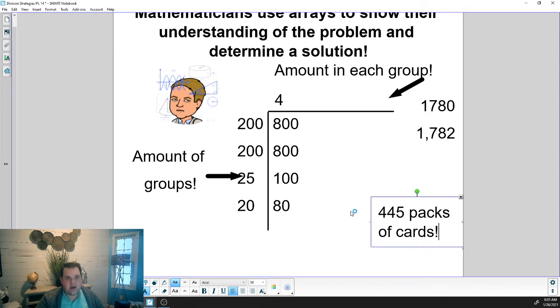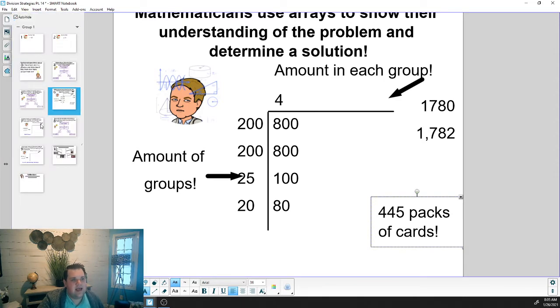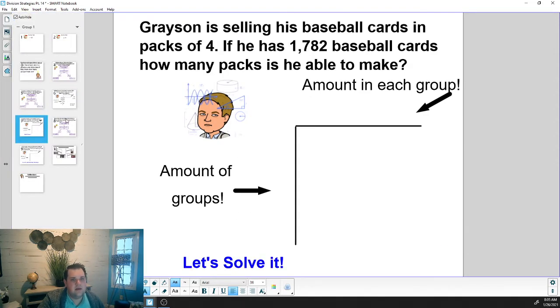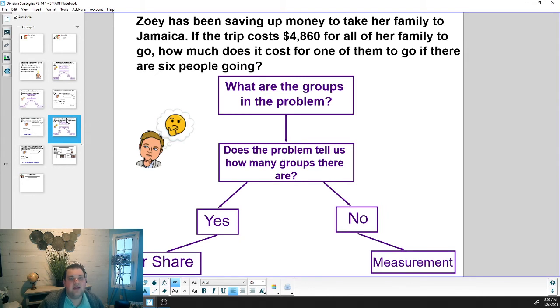We're going to try one more together today for mini lesson. The next one says Zoe has been saving up money to take her family to Jamaica. If the trip costs $4,862 for all of her family to go, how much does it cost for one of them to go if there are six people going? The first question we need to ask is what are the groups in the problem? Go ahead and enter into PlayPosit what you think the groups are.